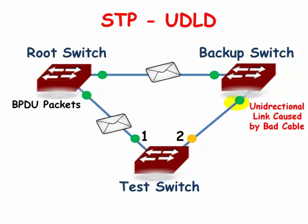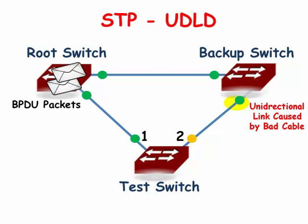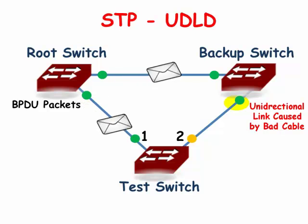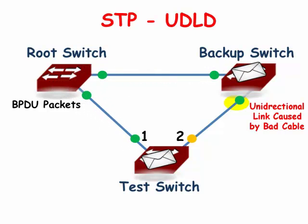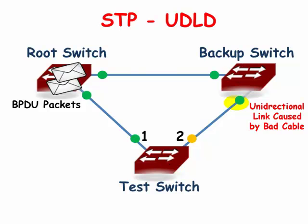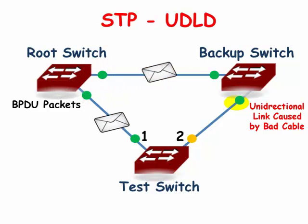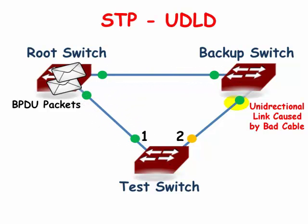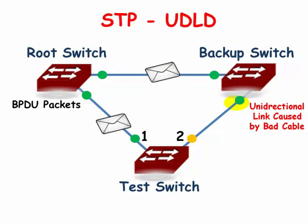A unidirectional link poses a potential danger to spanning tree topologies because BPDUs will not be received on one end of the link. If that end of the link normally would be in the blocking state, the missing BPDUs will cause it to go into the forwarding state.